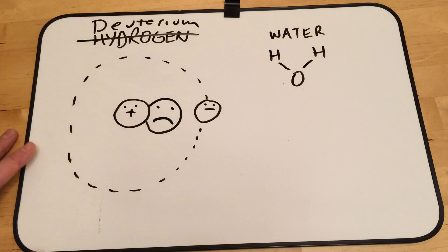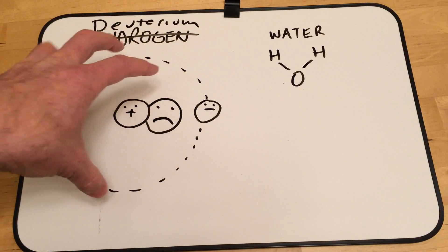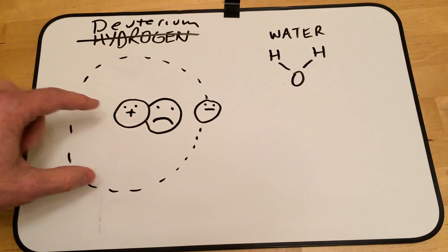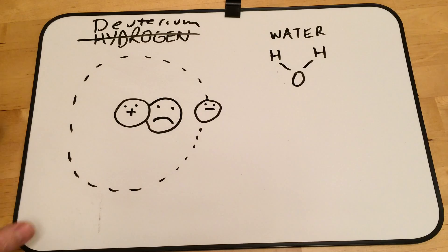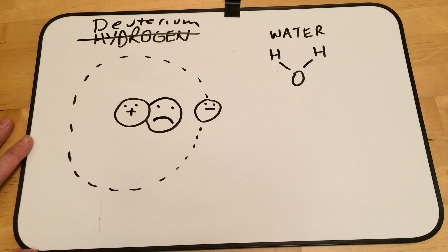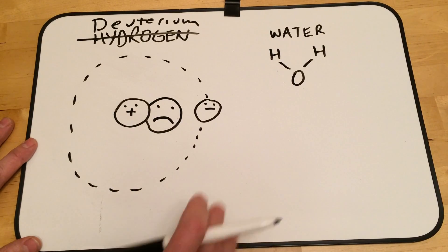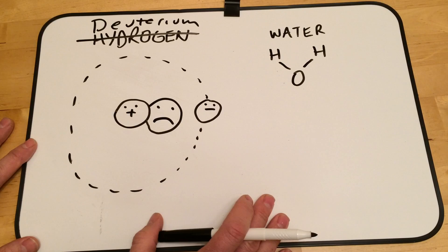So deuterium is the same as hydrogen and it acts like water and it lives in your water, but it's got this neutron in there that makes it twice as heavy and changes some of the other properties. And then when you drink it, your body can't process it the same way it would process water. So that's the science behind wanting to get the deuterium out of your water.